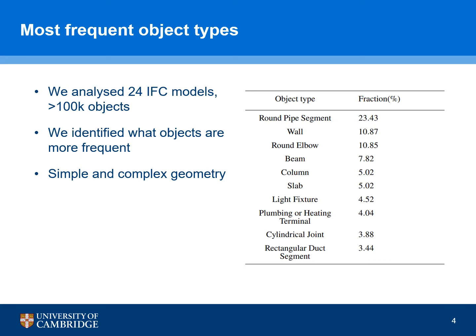Before jumping deeper into point cloud processing and analyzing state of practice and state of research, we tried to identify what buildings usually consist of. We gathered a number of IFC files of different buildings at different stages of their lifecycle. This included S-design and S-Ease IFC modules of residential buildings, offices, hospitals, commercial buildings, and others. You can see the top 10 frequent objects on the right part of the slide. The goal of this analysis was to identify what objects are more frequent than others to prioritize the automation of their digitization. Most of the listed objects tend to have simple geometry or a combination of primitive geometrical features such as planar or cylindrical surfaces, but some object types have complex geometry.